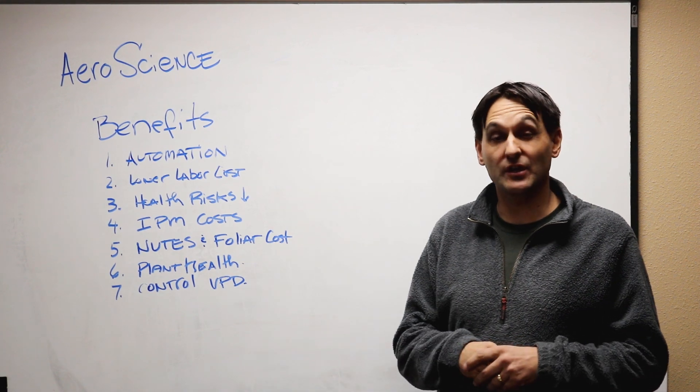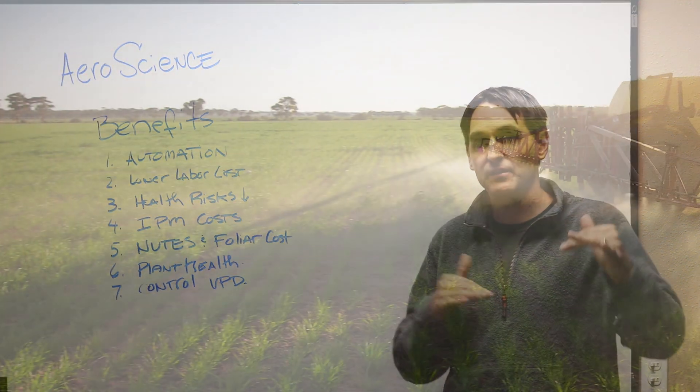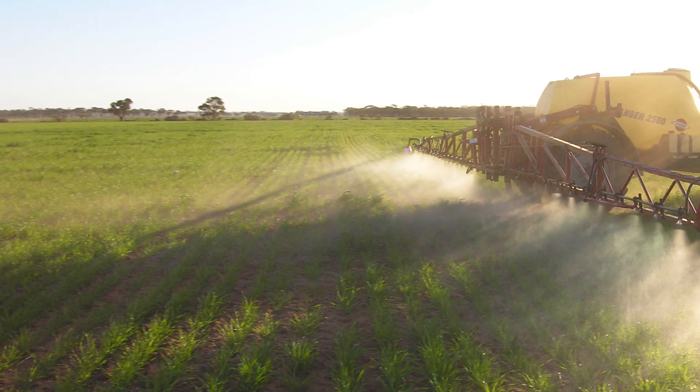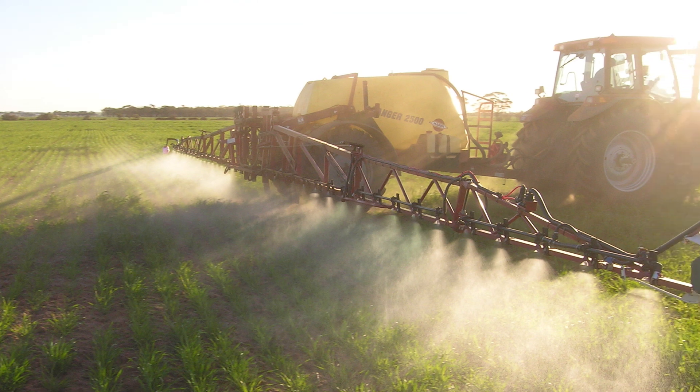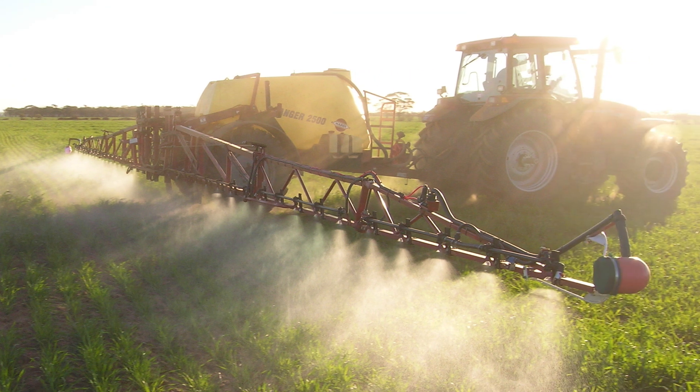The number two benefit is you're going to lower your labor costs by automating the foliar spray process or the humidification process. You're going to lower the amount of labor costs that you have for your greenhouse.